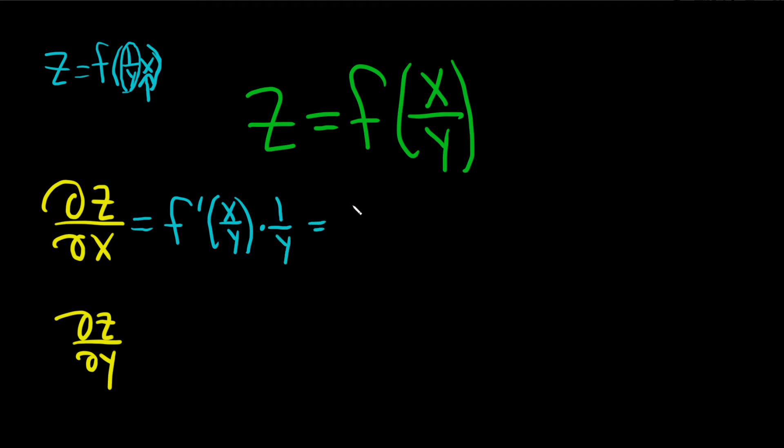So the answer here is just 1 over y, f prime of x over y. Again, when you differentiate with respect to x, all of your y's are constants.